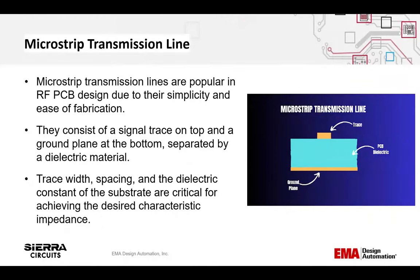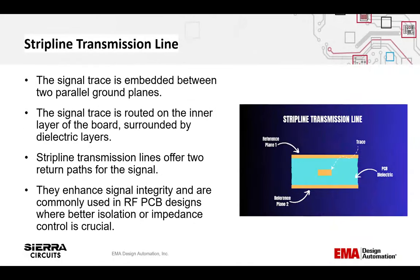Microstrip transmission lines are popular and commonly used in RF PCB design because they are simple and easy to fabricate. They have a signal trace on the top and a return path or ground plane at the bottom, with a dielectric material separating them. The trace width and spacing, along with the dielectric constant of the substrate material, are carefully chosen to achieve the desired characteristic impedance. Stripline transmission lines embed the signal trace between two parallel ground planes, offering a symmetric shape with two return paths. The signal trace is routed on the inner layer, surrounded by dielectric layers that separate it from the reference planes.